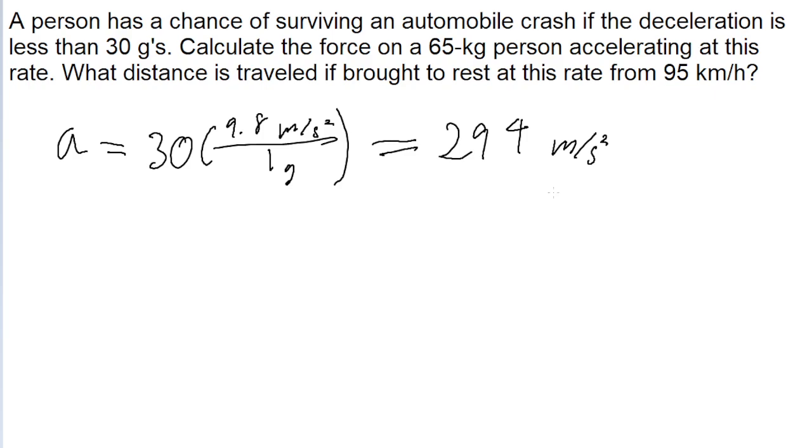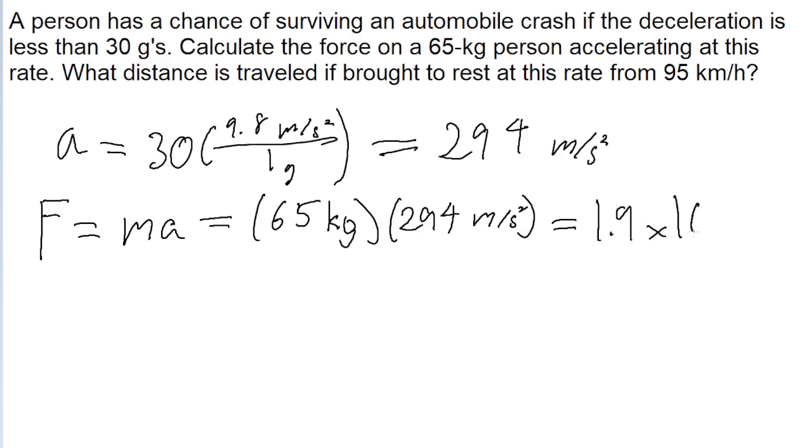Now, to calculate the amount of force on a person experiencing this, we just have to use Newton's second law, which states that force is equal to mass times acceleration. So, the mass is 65 kilograms, and we just found the acceleration, 294 meters per second squared. Put that into a calculator, and this is a force of 1.9 multiplied by 10 to the power of 4 newtons.